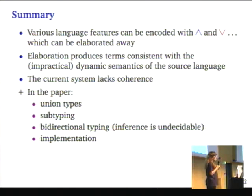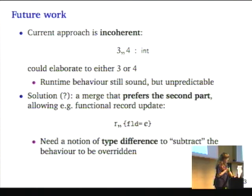To summarize, we can encode various language features using intersection and union, and then elaborate them away. The elaboration produces terms that are consistent with one of the runs of the unsafe and impractical dynamic semantics of the source. The current system lacks coherence. In the paper you can find, especially union types, subtyping, bi-directional typing because, by the way, type inference for intersections is undecidable, and implementation.